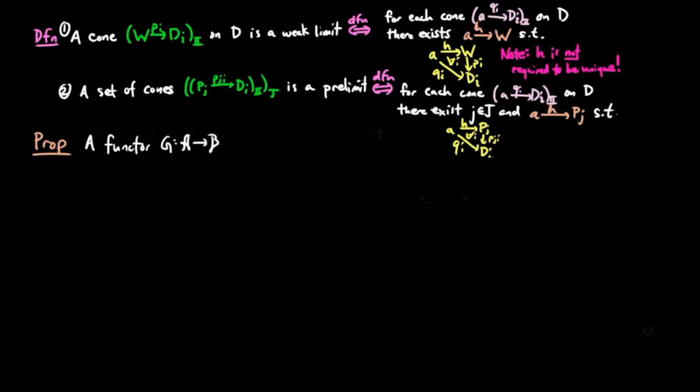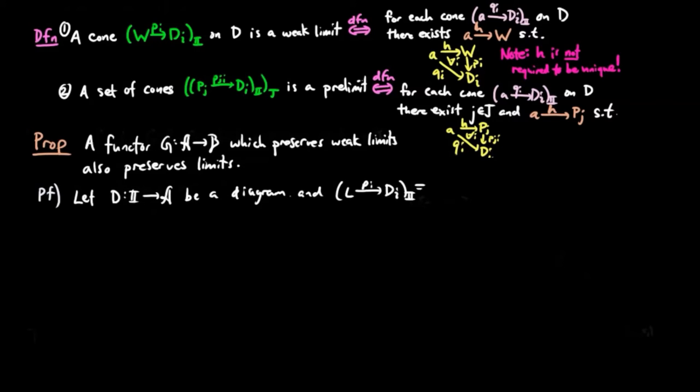A functor G which preserves weak limits also preserves limits. For the proof, we let D be a diagram in A and let PI be the limit of D.